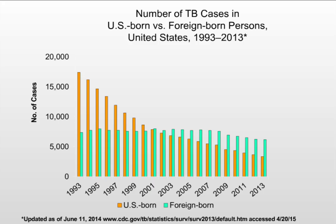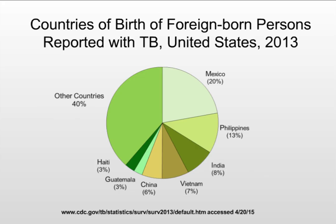Something interesting happened in 2001. Up to that point, the majority of TB cases were diagnosed in U.S.-born patients. Since 2001, the majority are in patients born abroad. The top countries of birth for foreign-born TB patients in the U.S. include Mexico at about 20%, Philippines 13%, India and Vietnam 7–8% respectively, China 6%, Guatemala and Haiti 3% each, and approximately 40% from other countries.